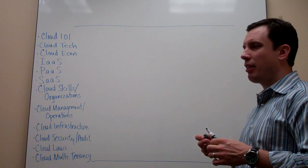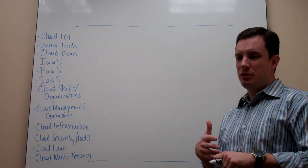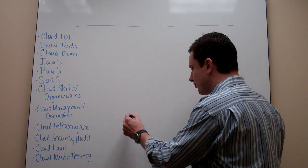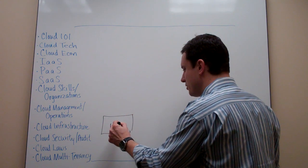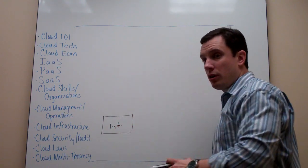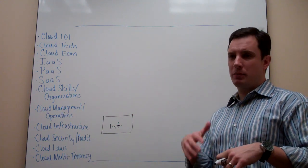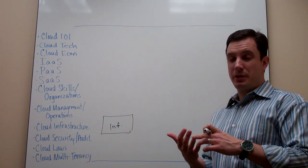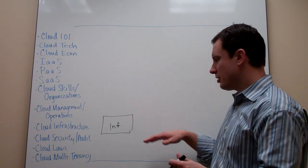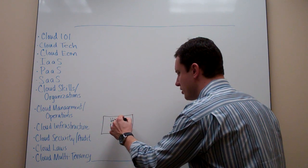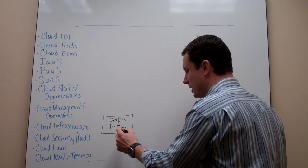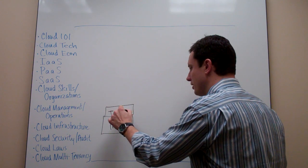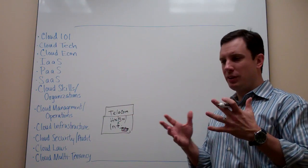The basic building blocks of where we spend money to consume or deliver IT services start with infrastructure — servers, storage, network, wide area networks, local area networks, storage networks — and software licensing. I should also break out telecommunications as a separate line item, because telecom costs cover telephone bills, wide area network bills, local area network cabling, and all those related things.